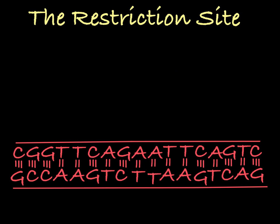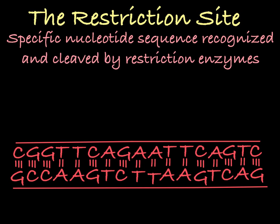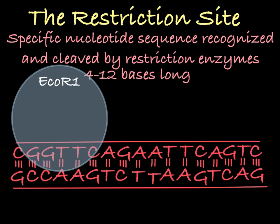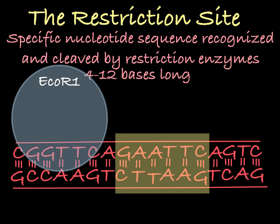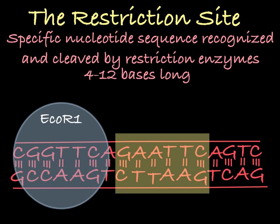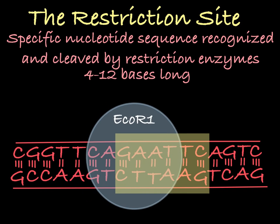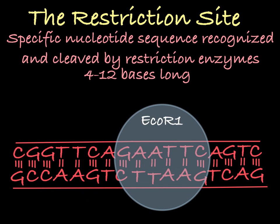Restriction enzymes can only recognize and cleave DNA at specific sites. This site is called a restriction site, which is often 4 to 12 bases in length. For example, the restriction enzyme EcoRI recognizes and cuts DNA at this site. It will scan the DNA, and when it finds the site GAATTC, it will cleave it.